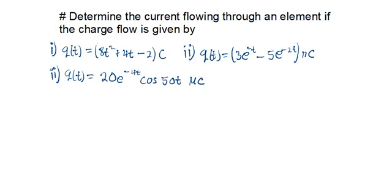We are going to look at some questions on circuit analysis. The question is asking us to determine the current when the charge is given. Just to remind ourselves: when we're talking about current, this is just the rate of change of charge, measured in amperes. So current I is equal to dQ over dt, meaning we are differentiating charge Q with respect to time t.